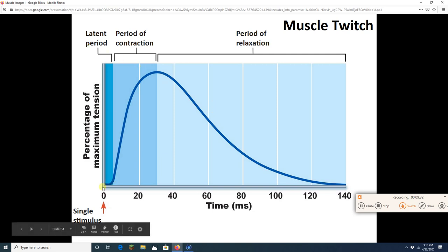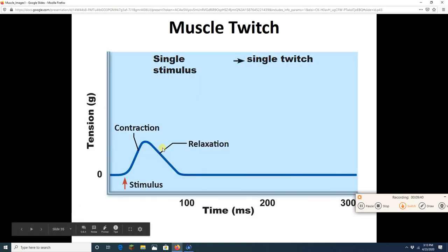So this is called a muscle twitch. Stimulate, then three things happen: latent period, period of contraction, period of relaxation. Next time we'll look at some more twitches, and we'll continue this discussion of muscles. See you guys later.